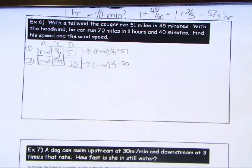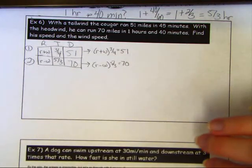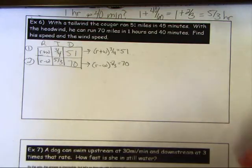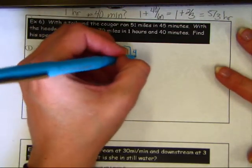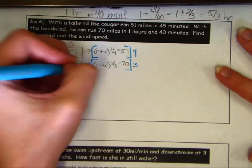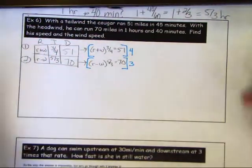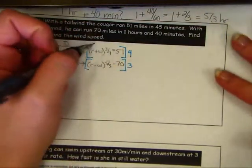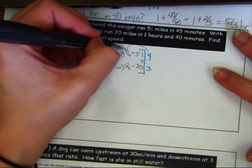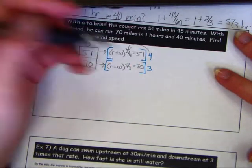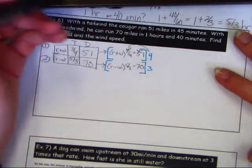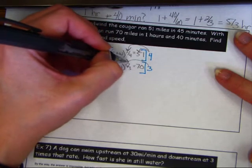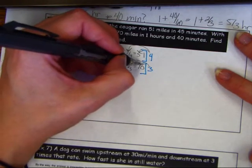We can distribute, but let's get rid of the fractions. Multiply the top equation by 4 and the bottom equation by 3. When you distribute the 4, apply it to the 3/4 and to the 51. When you distribute the 3, apply it to the 5/3 and to the 70.